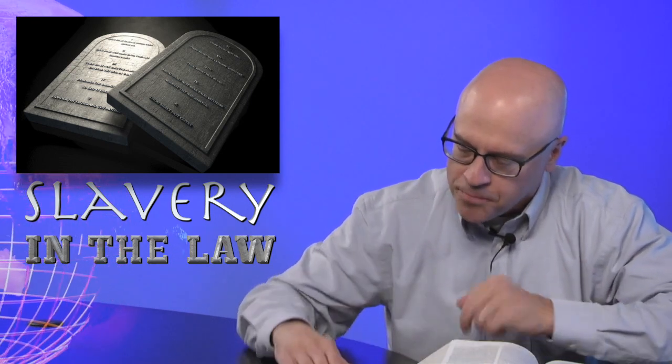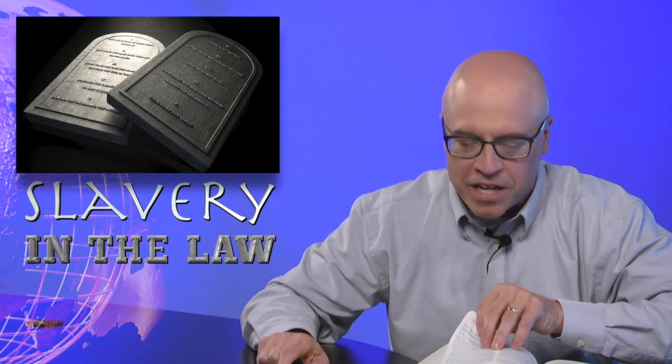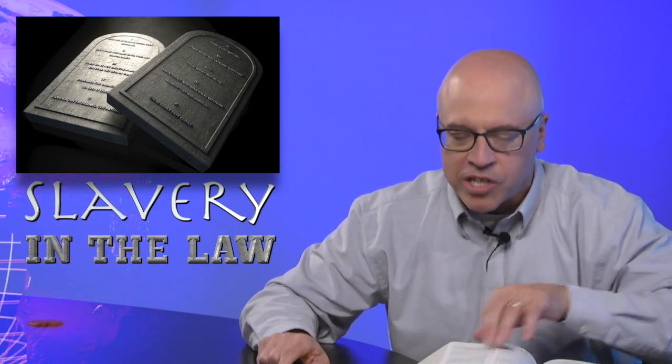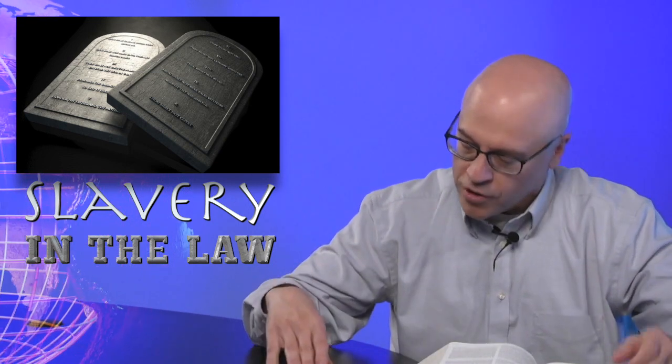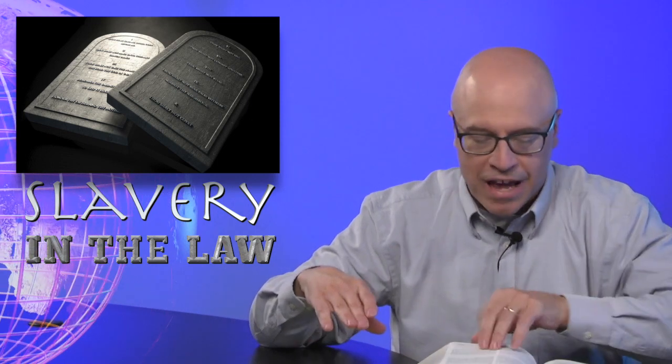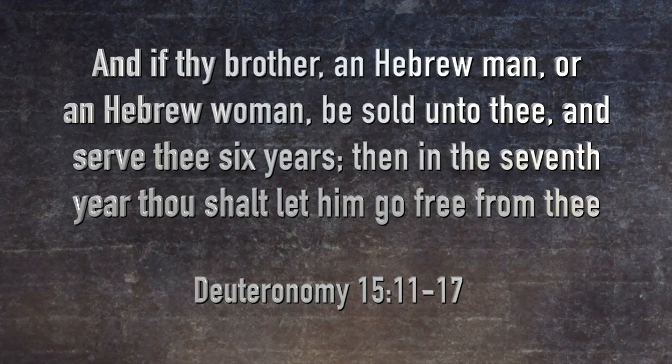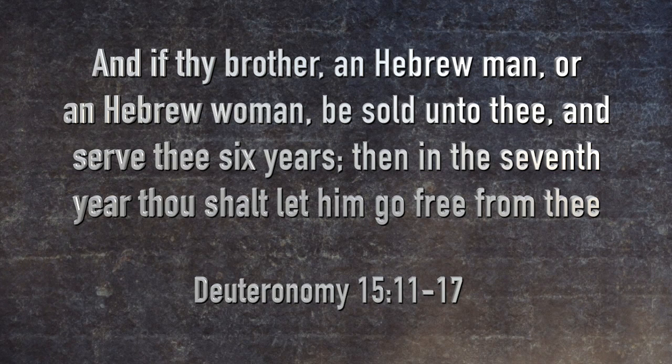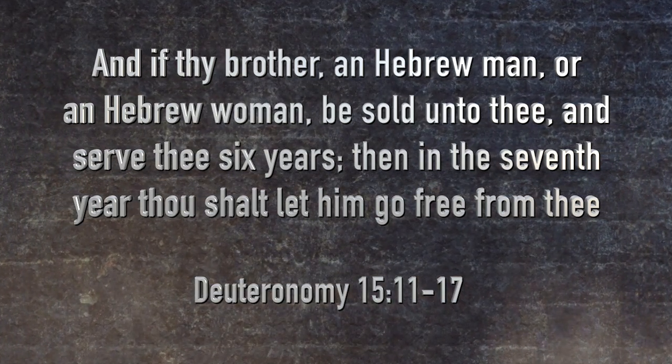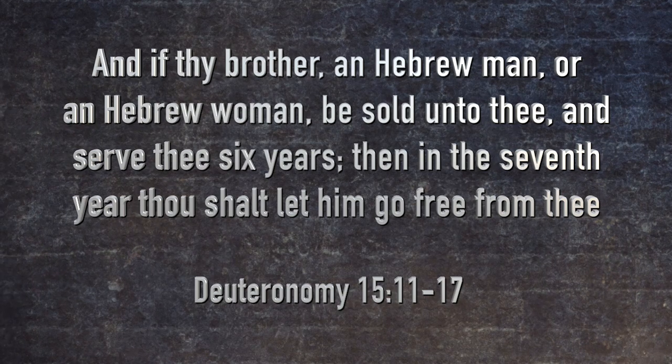Numbers chapter 15 - I'm going to pick it up there. Or I should say Deuteronomy chapter 15. I'll begin reading there over in verse 11, and I'm going to be reading about something else that sometimes is associated with slavery, but this isn't slavery per se. In Deuteronomy chapter 15, verse 11, listen to what we read here. And if thy brother, a Hebrew man or a Hebrew woman, be sold unto you - now that means that a Hebrew could sell themselves to you because of their financial or economic situation - and serve you six years, then in the seventh year they shall let him go free from thee.